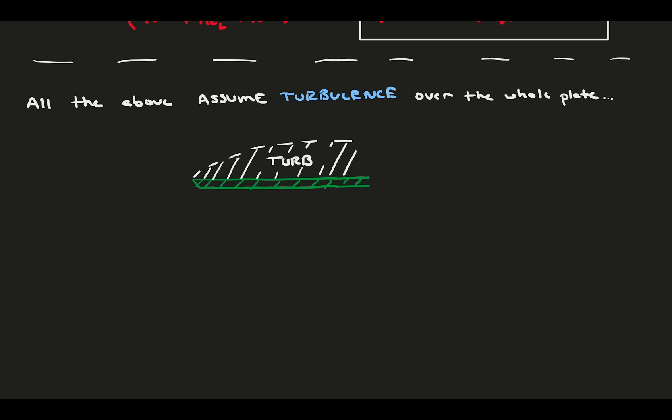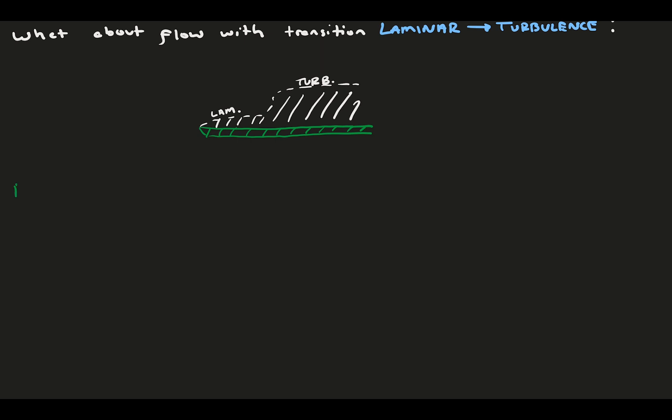So far, everything we've done today assumes that the flow was entirely turbulent from the beginning of the plate. And for some flows, this is okay. If you have a rough wall, or you had a trip to turbulence at the beginning of your plate, or if you have a super high Reynolds number where the laminar portion doesn't matter, assuming fully turbulent, it's an okay thing to do. But some flows naturally transition to turbulence, and the laminar portion is meaningful to the flow. To cover these cases, Prandtl came up with a more general relationship that accounts for natural transition. And the idea is actually relatively simple.